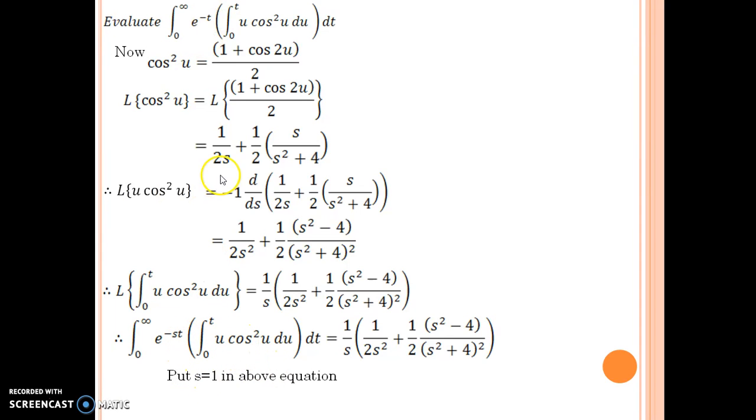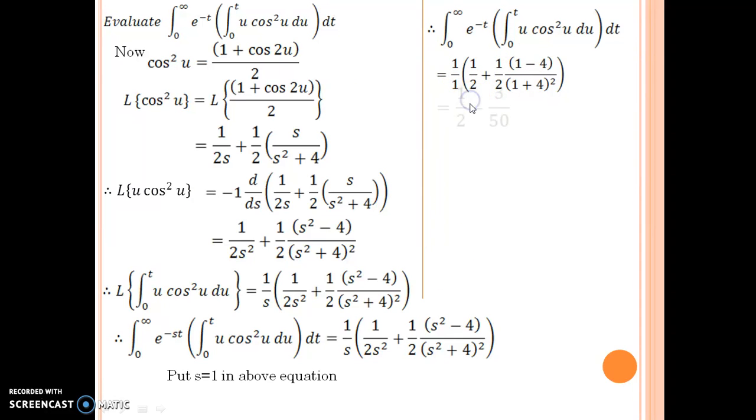If you do this, you obtain your main question. Thus what you can do is substitute s equal to 1 in this equation on both the sides, LHS as well as RHS. So on LHS you get your main question and on RHS you obtain this substitution. When you simplify it further, you obtain your final answer as 11 by 25.